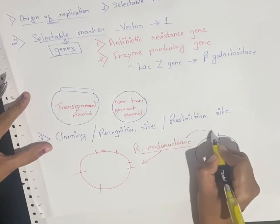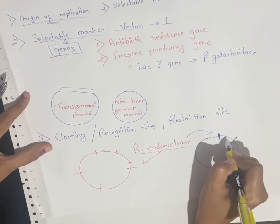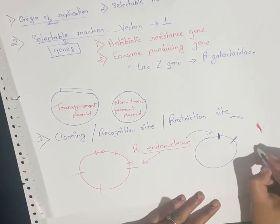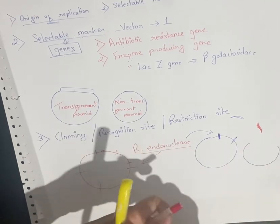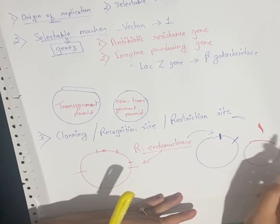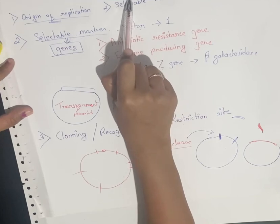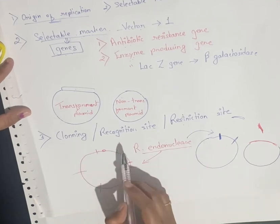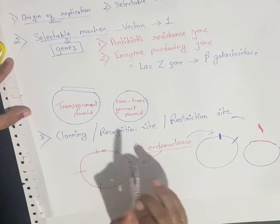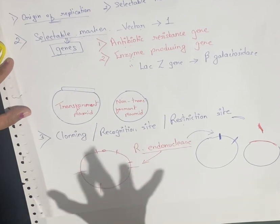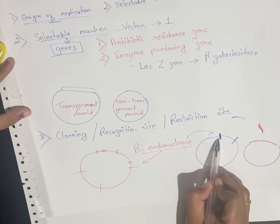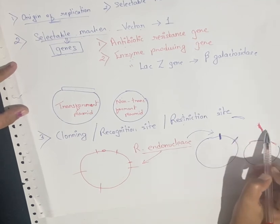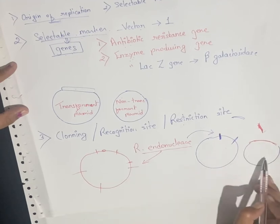With a single restriction site, the restriction endonuclease will come and cut that particular segment of DNA. The alien DNA or foreign gene can then be ligated to that specific site. Remember, a plasmid acting as a vector should have a restriction site, but there should not be too many — preferably just one — so that a specific fragment can be cleanly cut and the same restriction endonuclease can cut the foreign DNA for ligation.